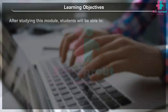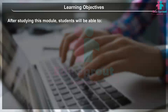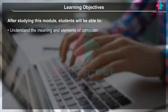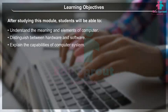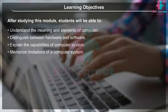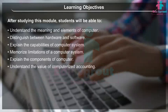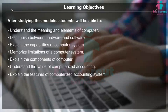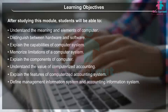Learning Objectives: After studying this module, students will be able to understand the meaning and elements of a computer, distinguish between hardware and software, explain the capabilities and limitations of a computer system, explain the components of a computer, understand the value of computerized accounting, explain the features of computerized accounting system, define Management Information System and Accounting Information System, and design comprehensive accounting reports.